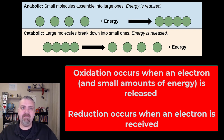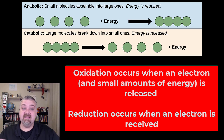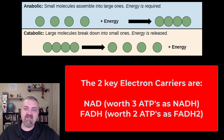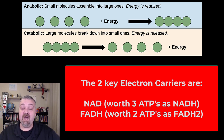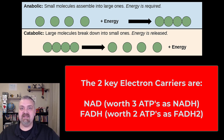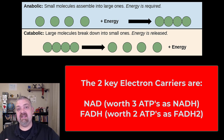So far we've covered metabolism, anabolism, catabolism, oxidation, reduction, and ATP. When we talk about transferring electrons in oxidation and reduction reactions, where do they go? Your two electron carriers — your electron transporters, which are wildly important in this unit — are NAD and FAD. As they pick up electrons and hydrogen ions, they become NADH and FADH2.